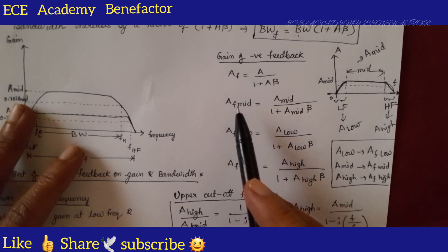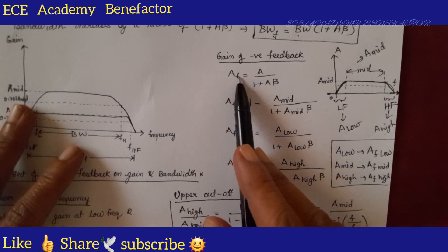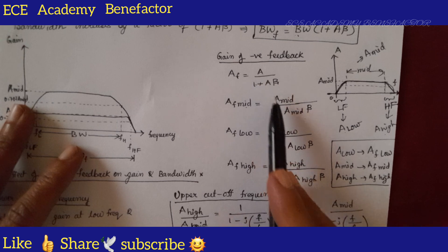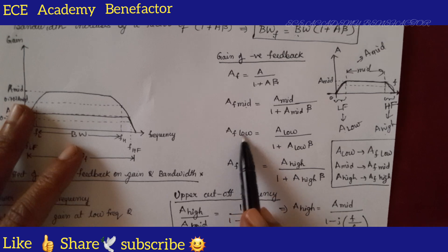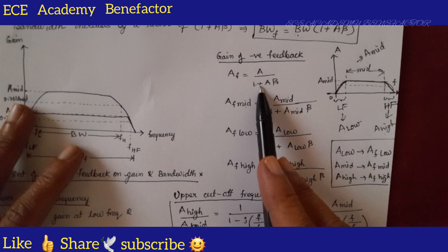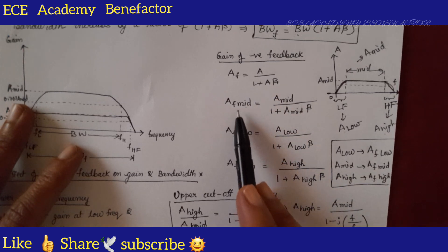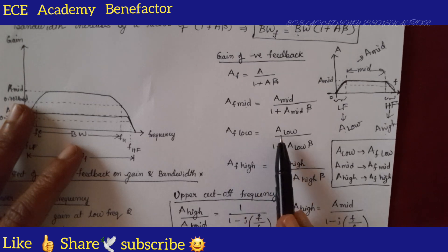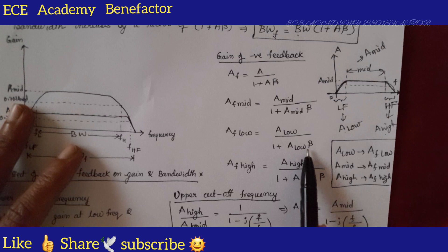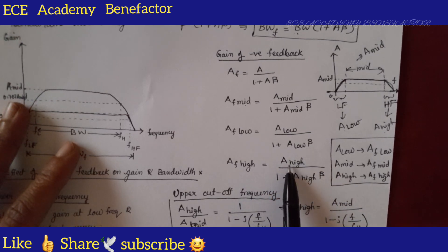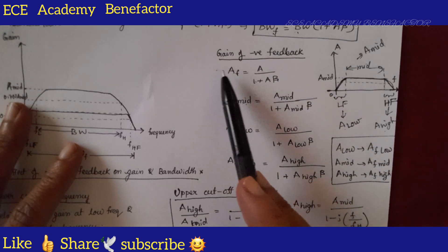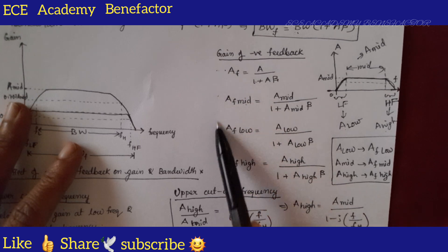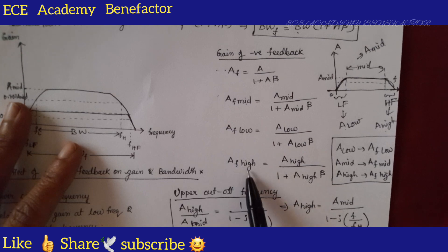We know the gain equation of negative feedback: Af equals A by 1 plus A·beta. Now, there are three gains — A_mid, A_low, and A_high. The gain equation for AF_mid is: AF_mid equals A_mid divided by 1 plus A_mid·beta. AF_low equals A_low divided by 1 plus A_low·beta. AF_high equals A_high divided by 1 plus A_high·beta. These are the three gain equations to remember.